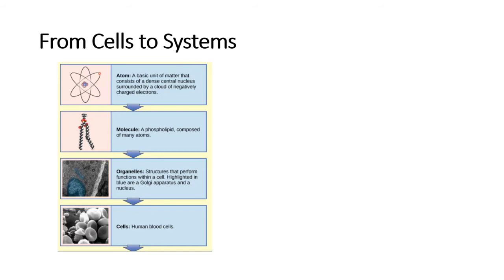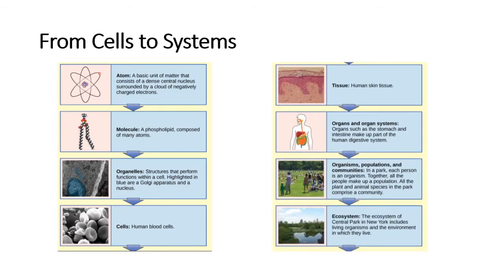In most multicellular organisms, cells combine to make tissues, which are groups of similar cells carrying out the same function. Organs are collections of tissues grouped together based on a common function. Organs are present not only in animals but also in plants.